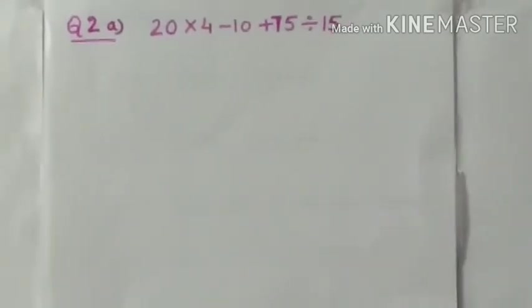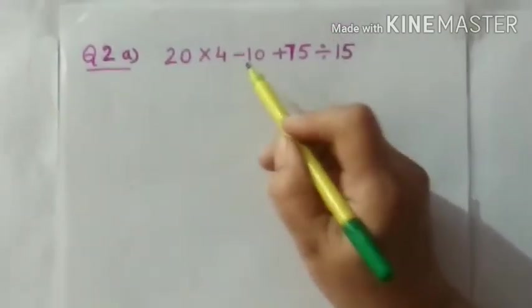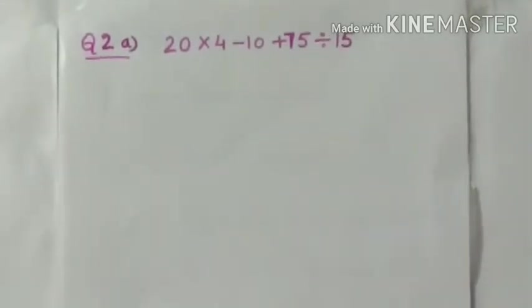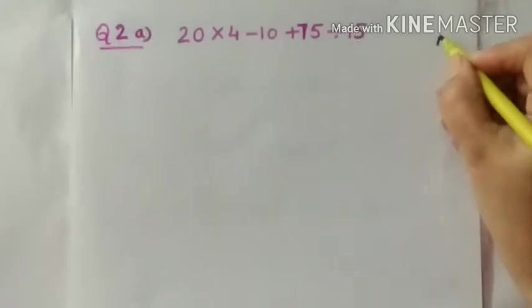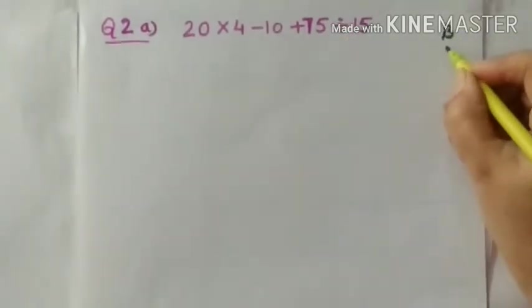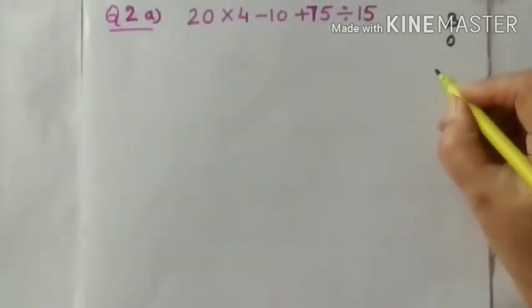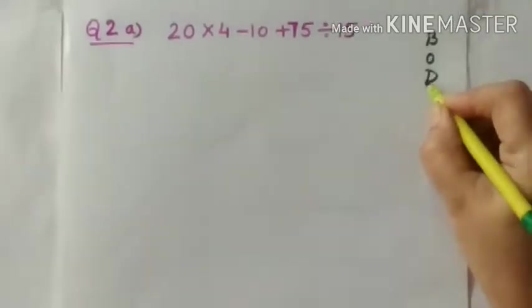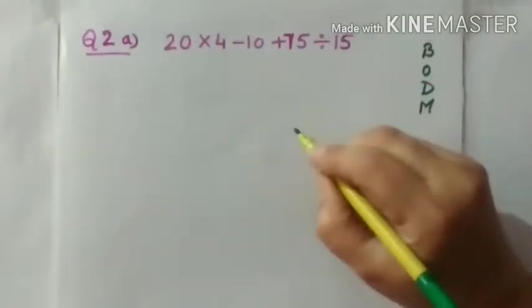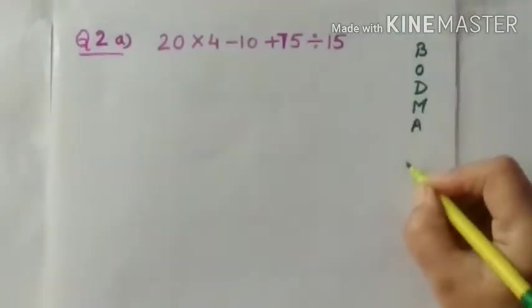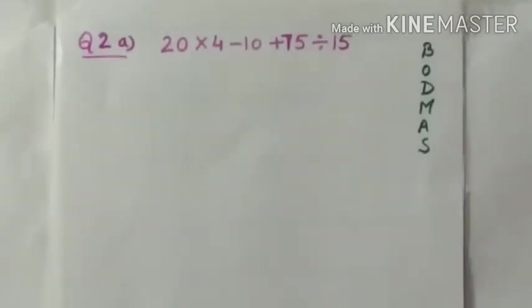this is the numerical expression is given. You have four operations given. Multiply, minus, addition and divide. So we will follow here BODMAS rule. So according to BODMAS rule, we have to use the bracket which we have not. Then O means off, off also not there. Then D means divide. And then multiply, divide is there. So first we solve divide, then multiply, then addition and then subtraction.